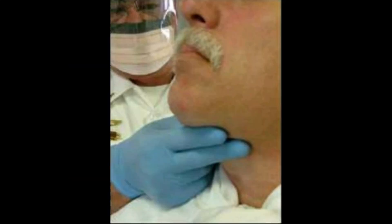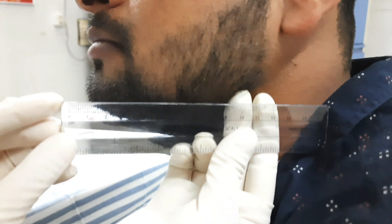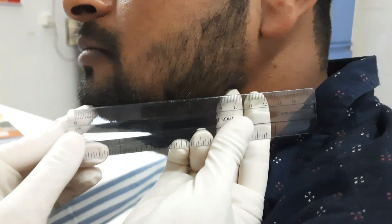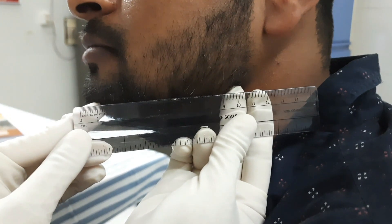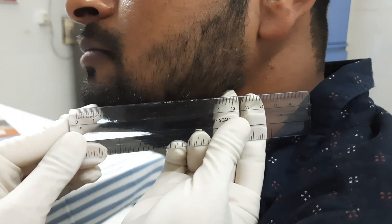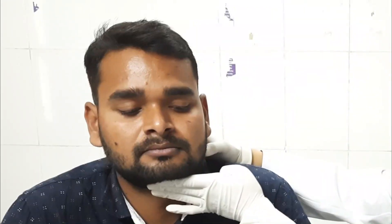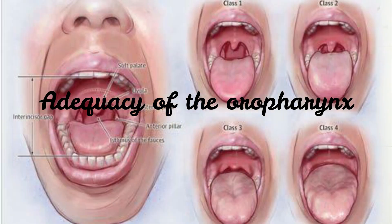Similarly, the hyomental distance is measured between the mentum and the hyoid bone, which can also be assessed with fingerbreadths. The length of the mandible alone does not have much predictive value; however, a horizontal length of at least 9 cm would suggest easy intubation. The compliance of the submandibular space should also be assessed. To assess the adequacy of the oropharynx, palate assessment and Mallampati grading is done.